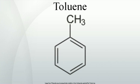Toluene is an important organic solvent, but is also capable of dissolving a number of notable inorganic chemicals such as sulfur, iodine, bromine, phosphorus, and other non-polar covalent substances.